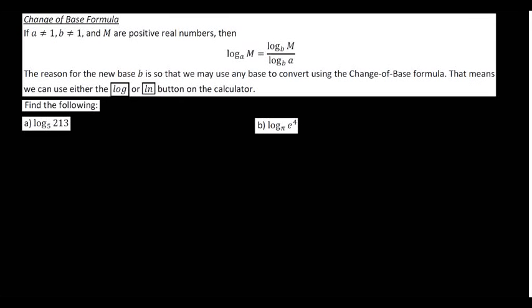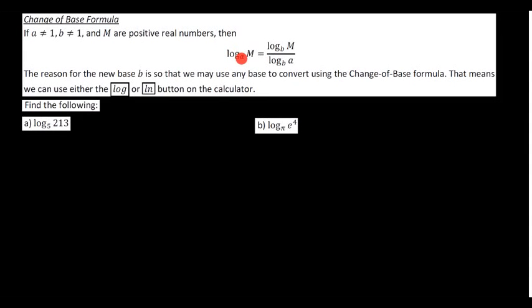Finally, we get to the change of base formula. Now the change of base formula says that the log base anything is equal to the log of the argument divided by the log of the base. We have the base here, and the argument M here. Now, what these b's say is that we can use any other base to convert. Specifically, we'll use either our logarithm button, or our natural logarithm button. It does not matter which one you use, just as long as you stick with whichever one you're using.